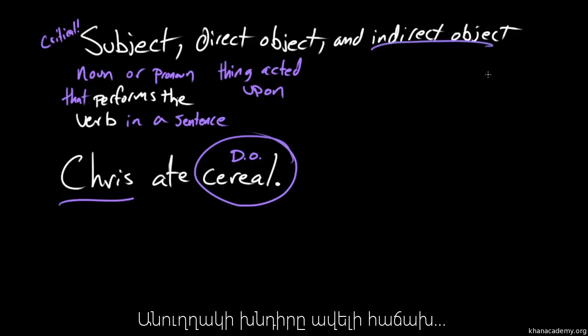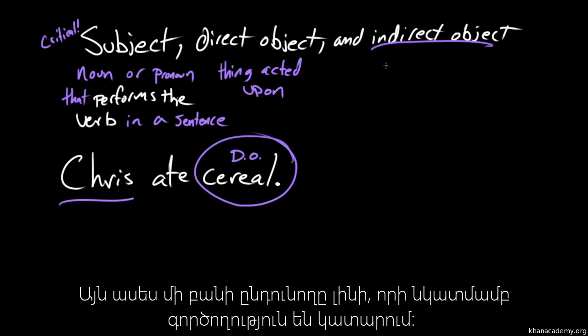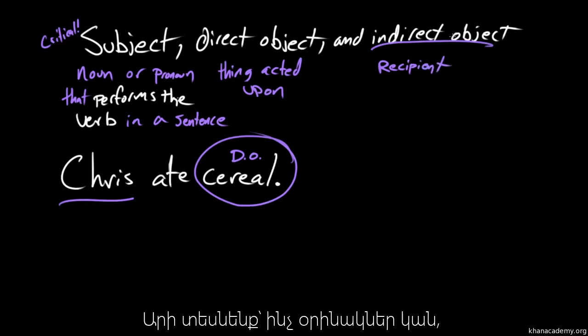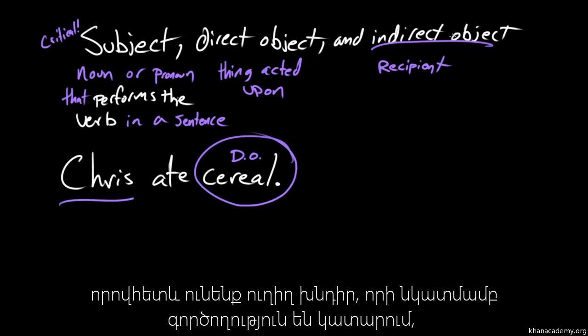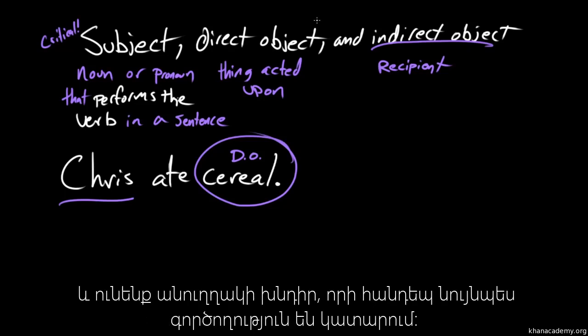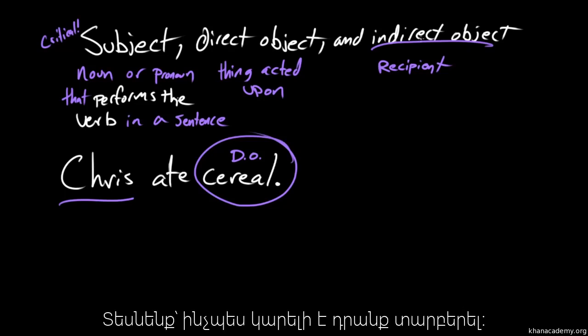So an indirect object is often signifying a recipient of something. So it's like another thing in the sentence that might be acted upon. So let's see if we can come up with some examples for that. Because we have this direct object, which is this thing being acted upon. And then the indirect object is also being acted upon, but it's being acted upon in like a giving way. Let's see if we can figure this out.